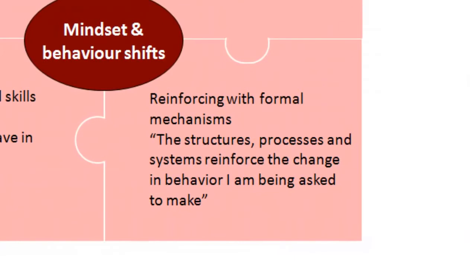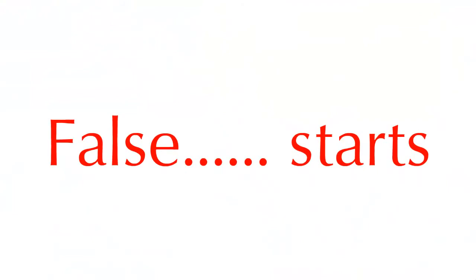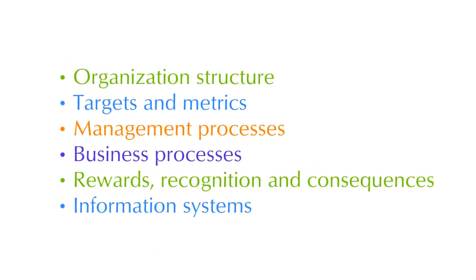The third part is reinforcing with formal mechanisms. If you don't do this, then you end up with false starts. Something starts for a little while with initial enthusiasm, but actually over time, unless it's reinforced by the way that things work, then it's only going to get so far. So you can think about it in a number of different ways. Think about the way that the organisational structure supports or doesn't support the new behaviours. About targets and metrics, management processes, business processes, rewards, recognition and consequences, and information systems too.